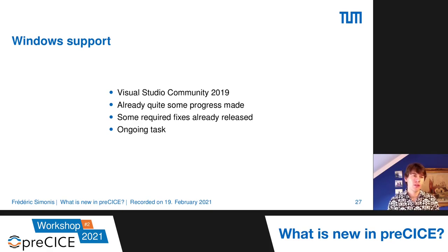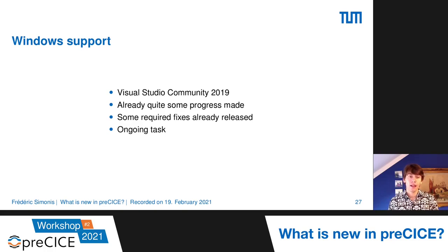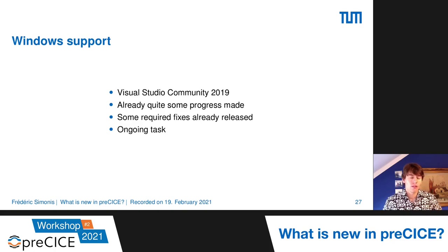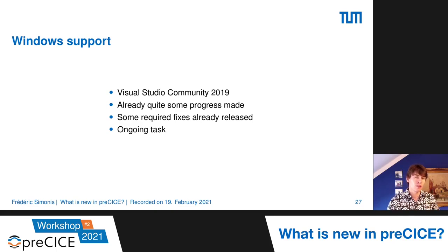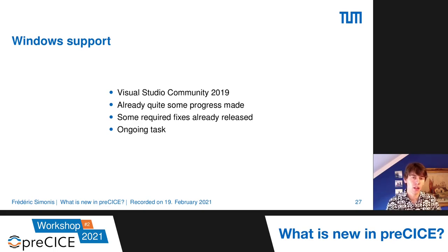Another major point in the outlook is Windows support. This is an ongoing task and we're currently targeting Visual Studio Community 2019. There has already been quite some progress — many of the fixes have already been released. This is on our radar; we want to come up with a native version. It is an ongoing task, so stay tuned — we will let you know when there's a major breakthrough.